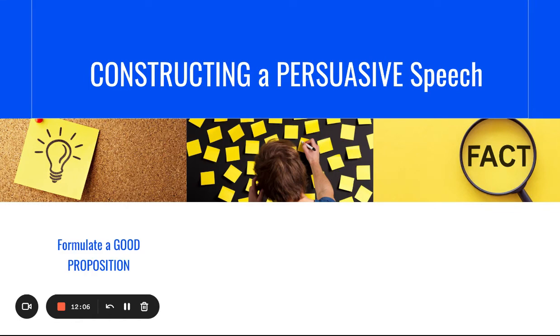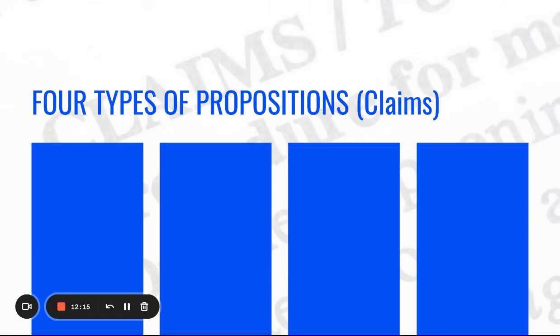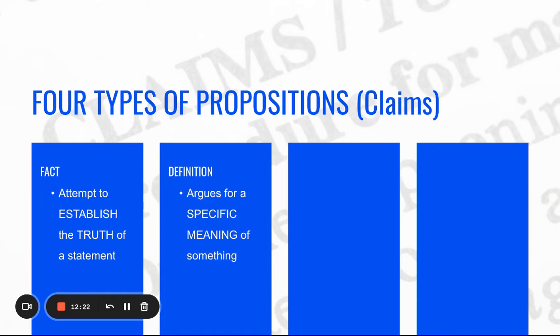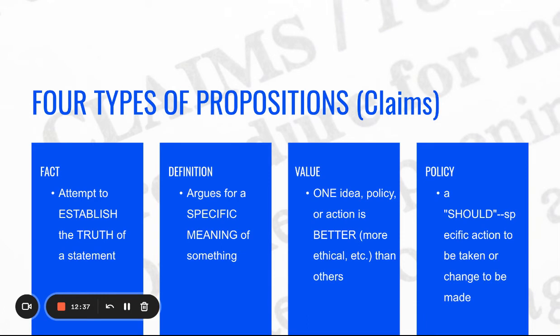When constructing a persuasive speech, formulate a good proposition and build the speech around its type, continuing to build with quality evidence. There are four types of propositions: a proposition of fact attempts to establish the truth of a statement; a proposition of definition argues for a specific meaning of something; a proposition of value argues that one idea, policy, or action is better or more ethical than others; and a proposition of policy argues that a specific action should be taken or a change made.